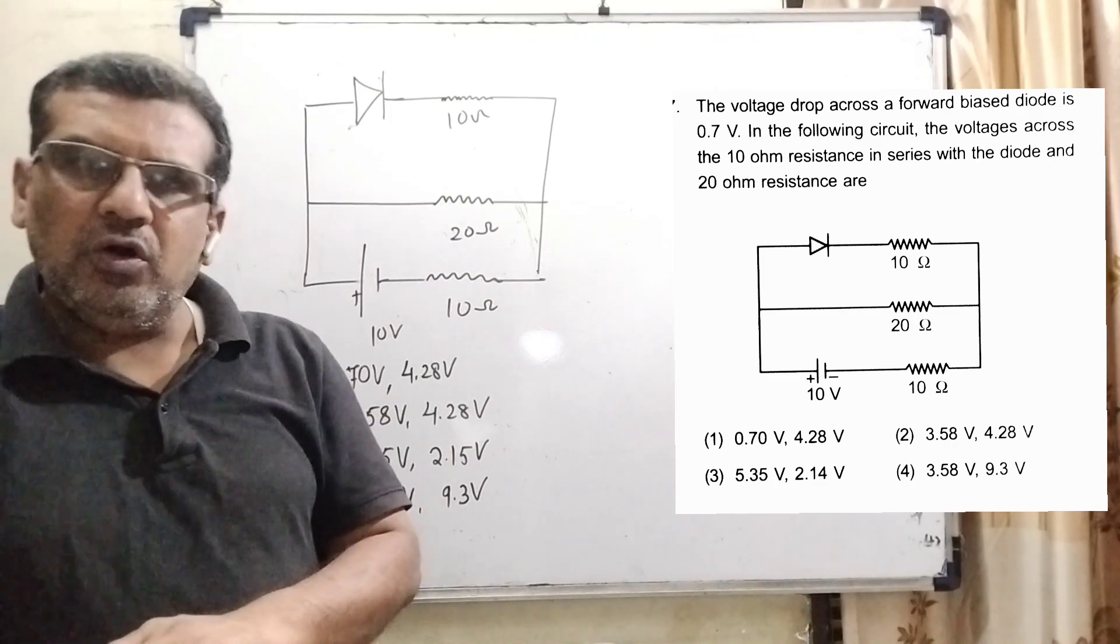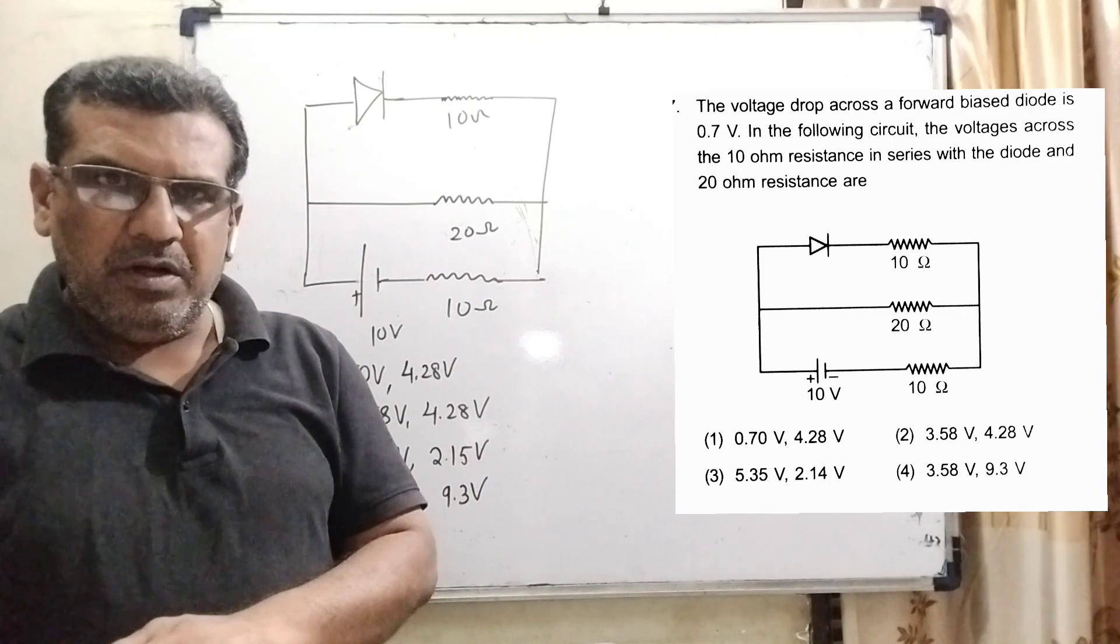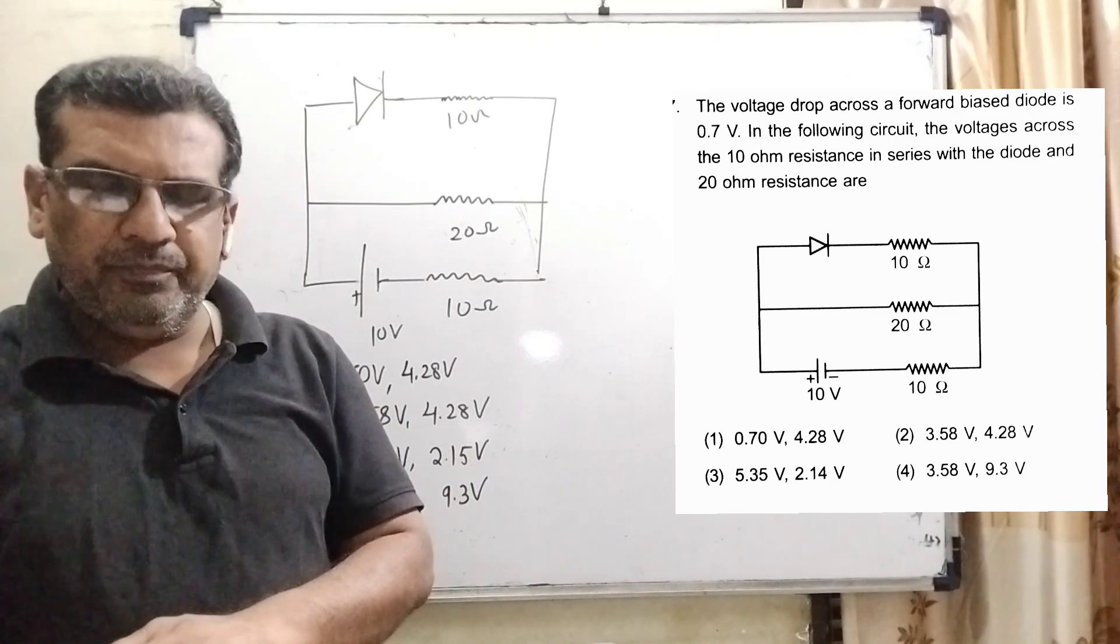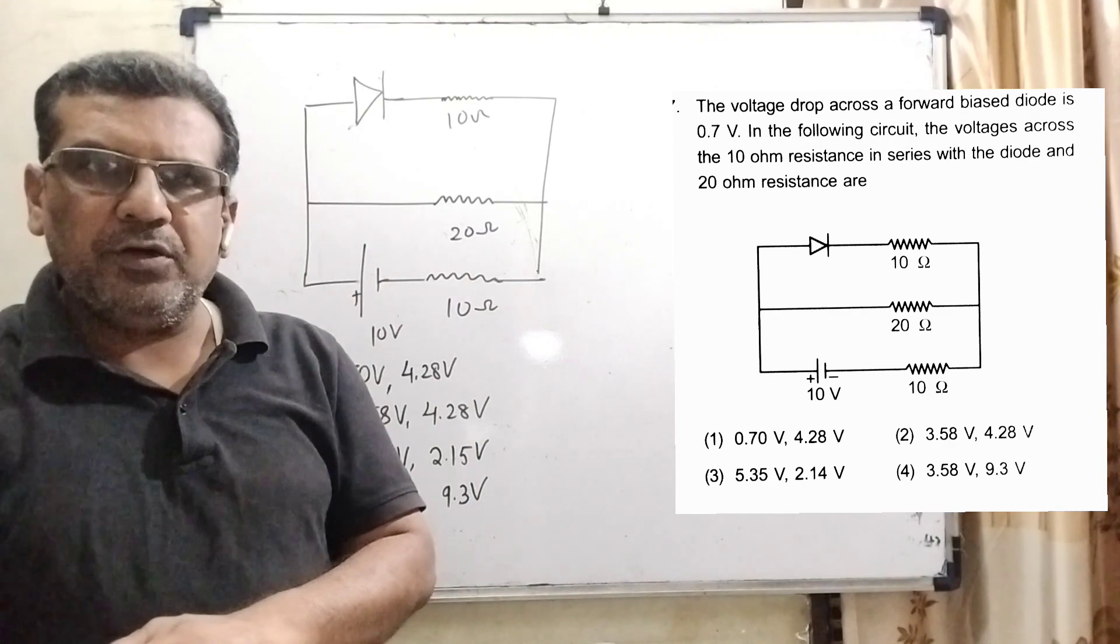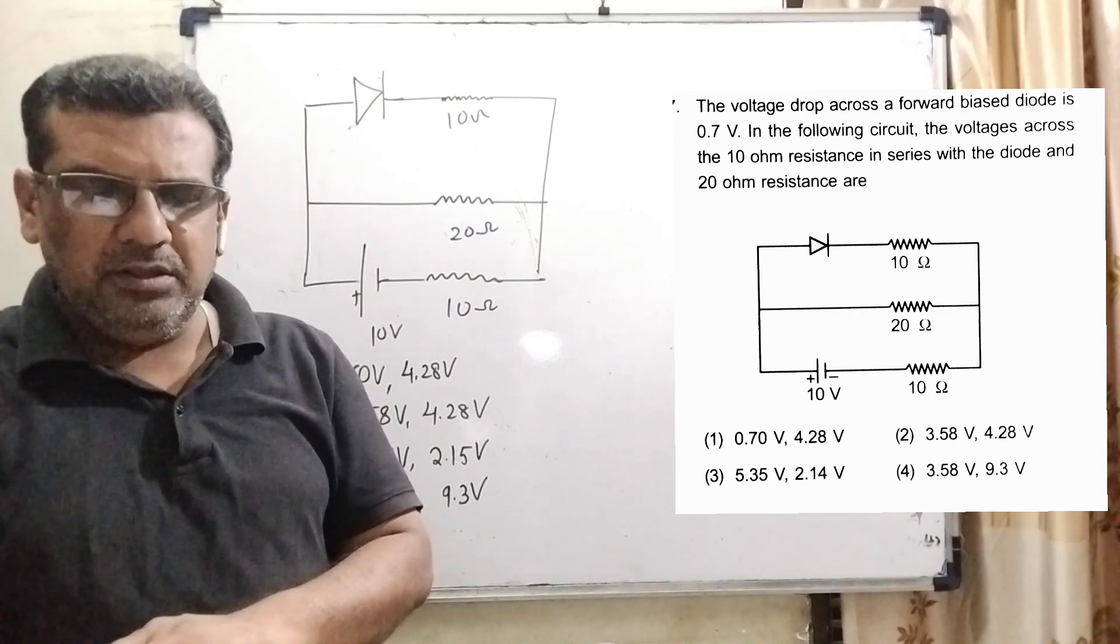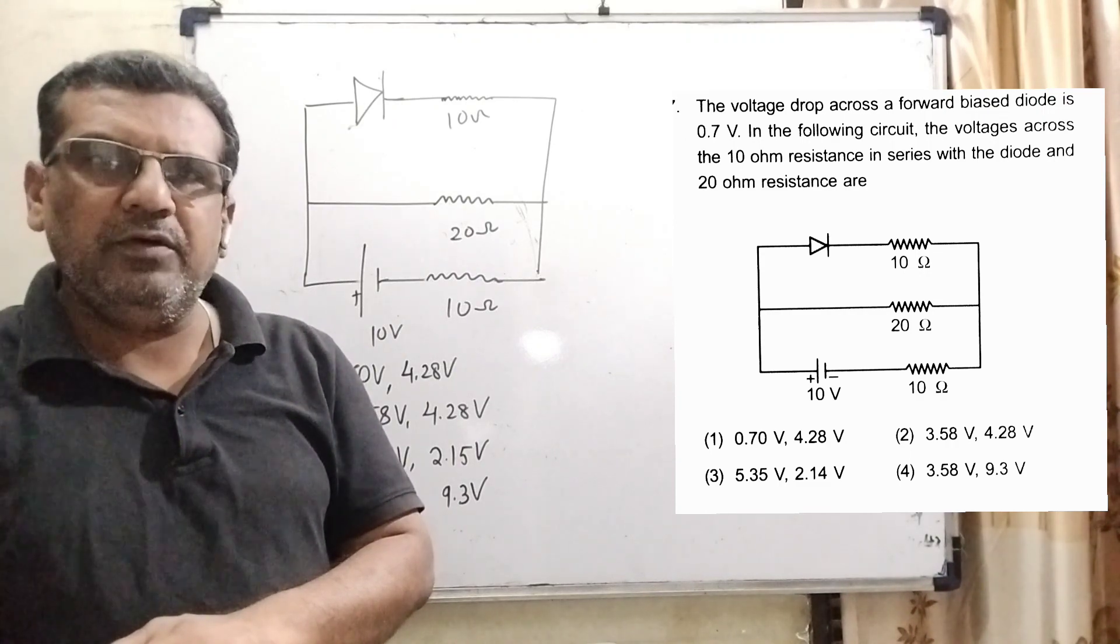Here we have given four options. Option A: 0.70V, 4.28V. Option B: 3.58V, 4.28V. Option C: 5.35V, 2.14V.